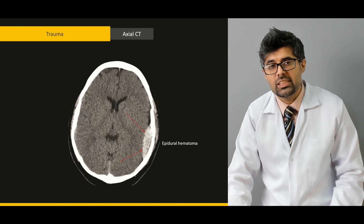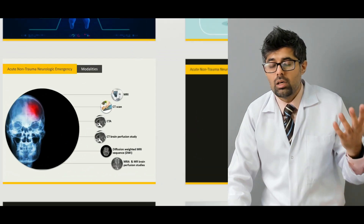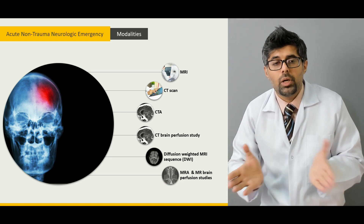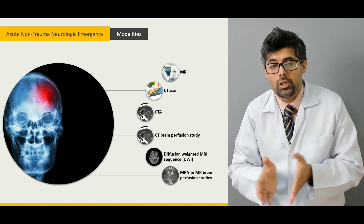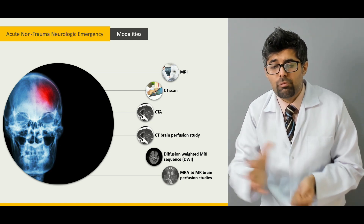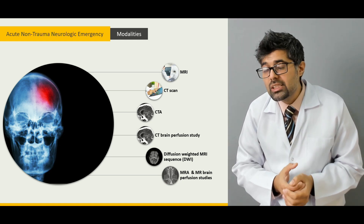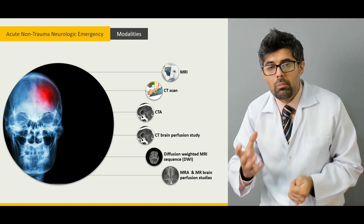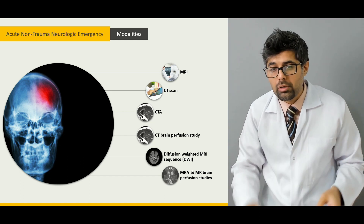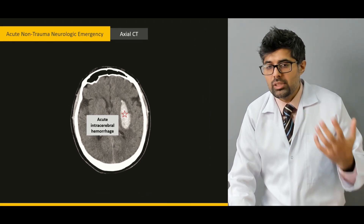We'll look at examples of epidural hematoma and its complications. Then we move on to non-traumatic neurological emergencies and their different modalities: MRI, CT scan, CT scan with perfusion study, and MRI with perfusion study — why we perform CT with perfusion, and why MRI comes first here while CT scan is second.